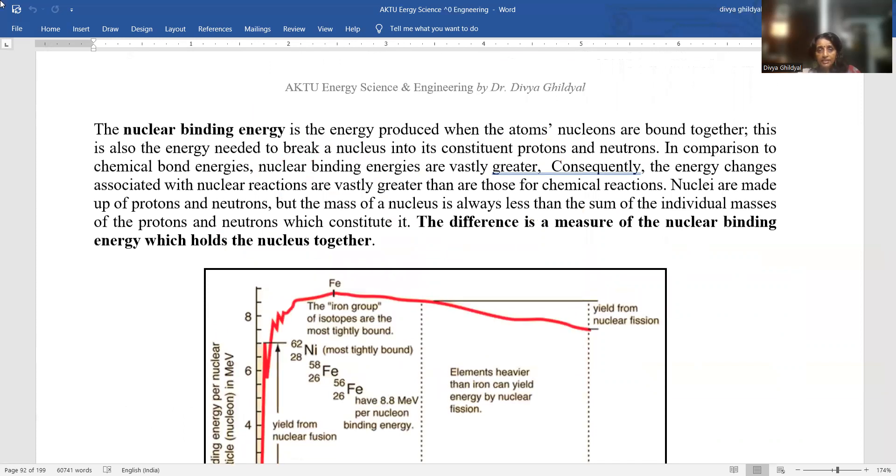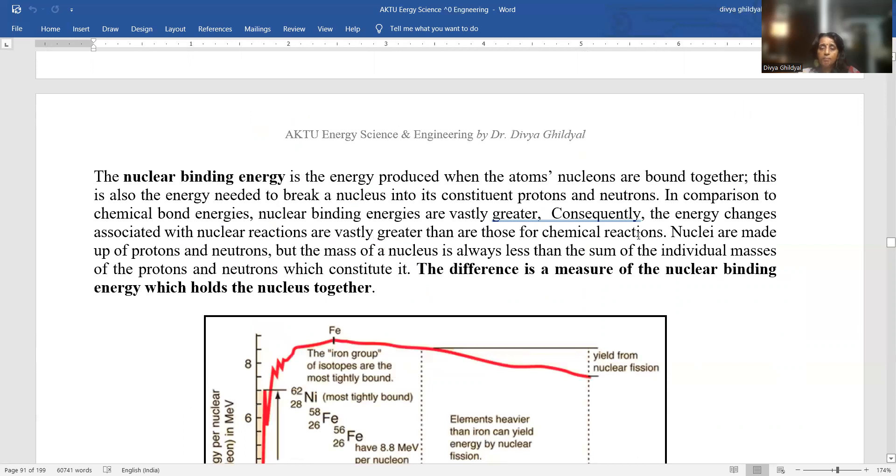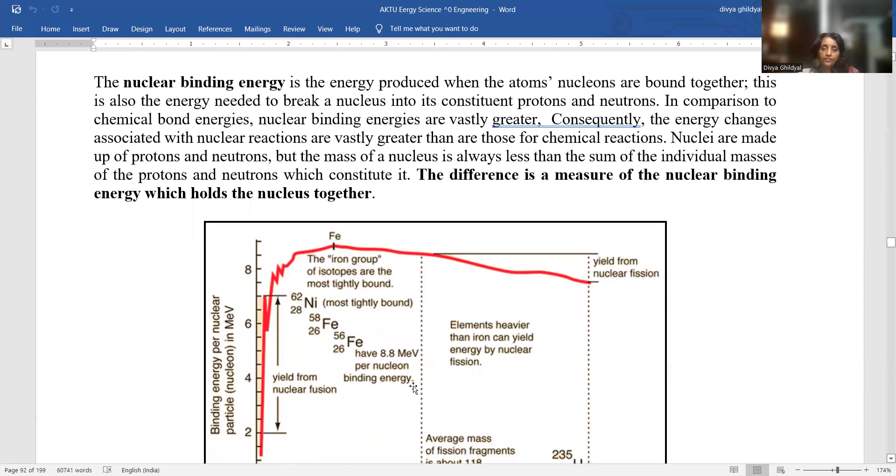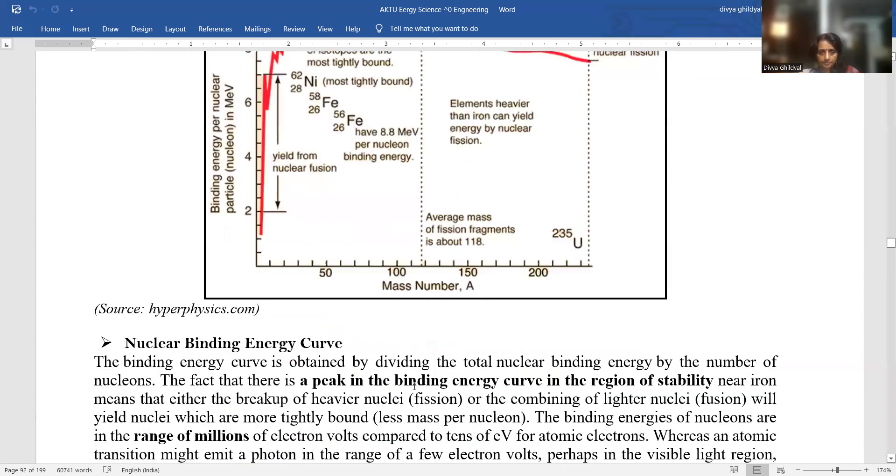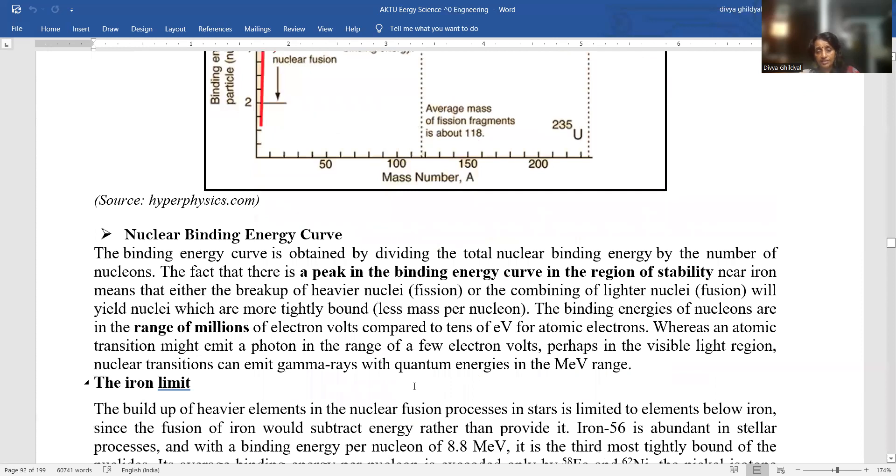Here in this range are the nuclear fusion phenomena happening and in this range the nuclear fission phenomena is happening. Binding energy, that means the energy produced when the atoms and nucleons are bound together. This is also energy needed to break a nucleus into its constituent protons and neutrons. Consequently, the energy changes associated with nuclear reactions are vastly greater than those for chemical reactions.